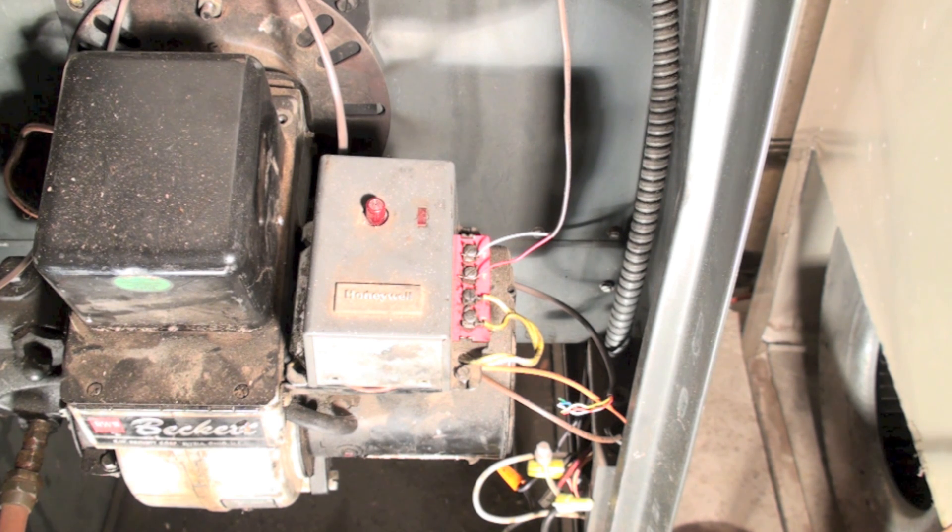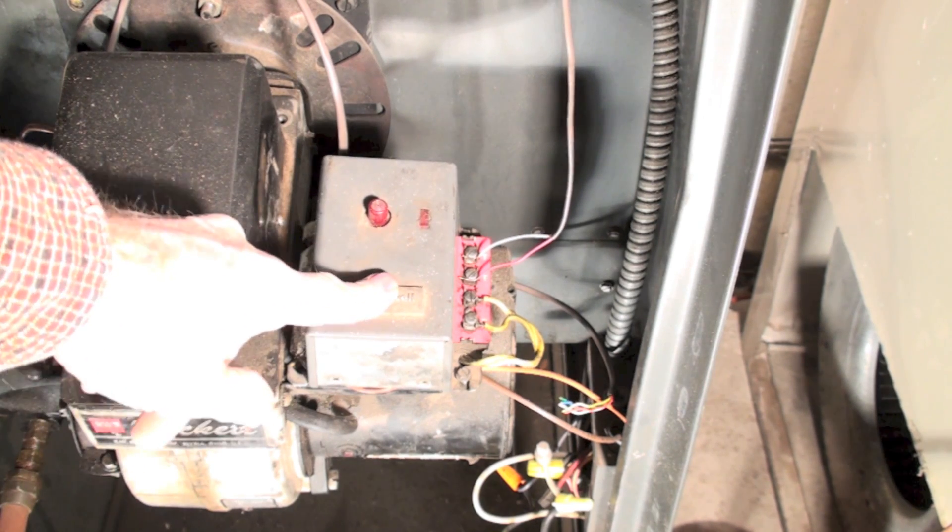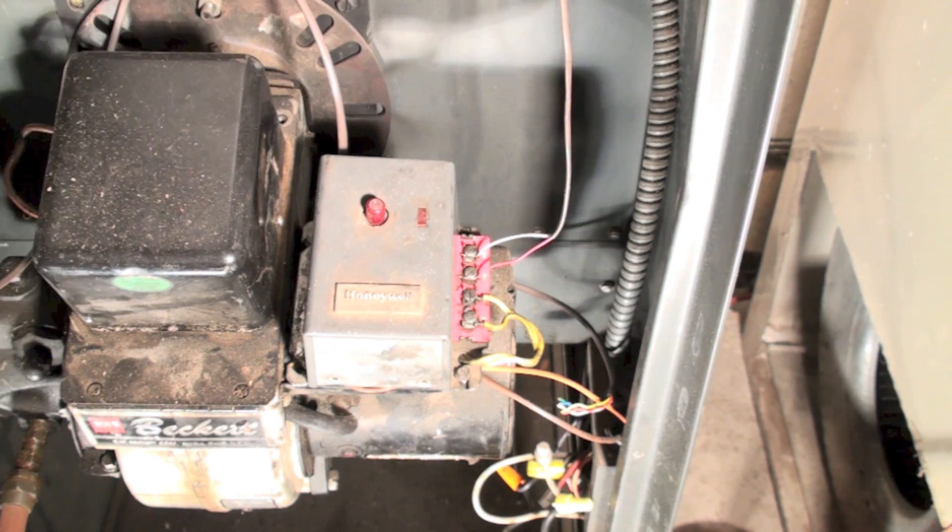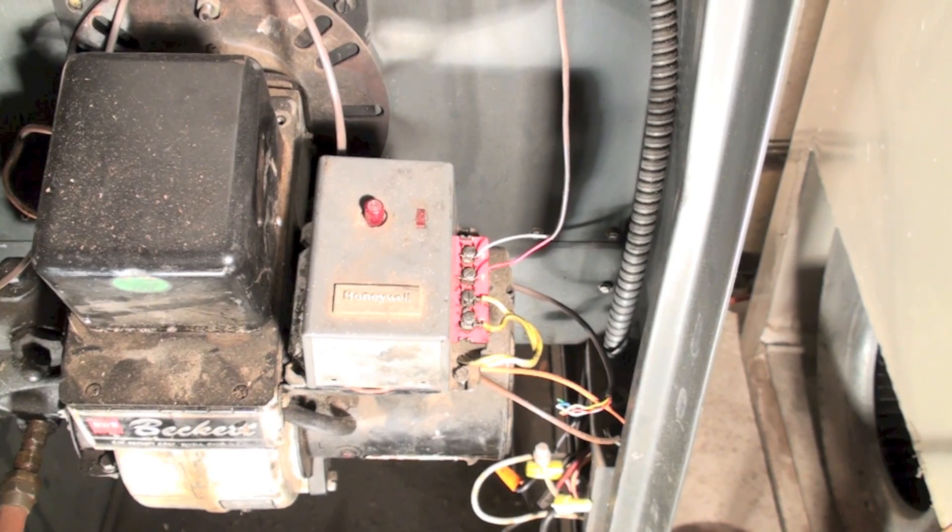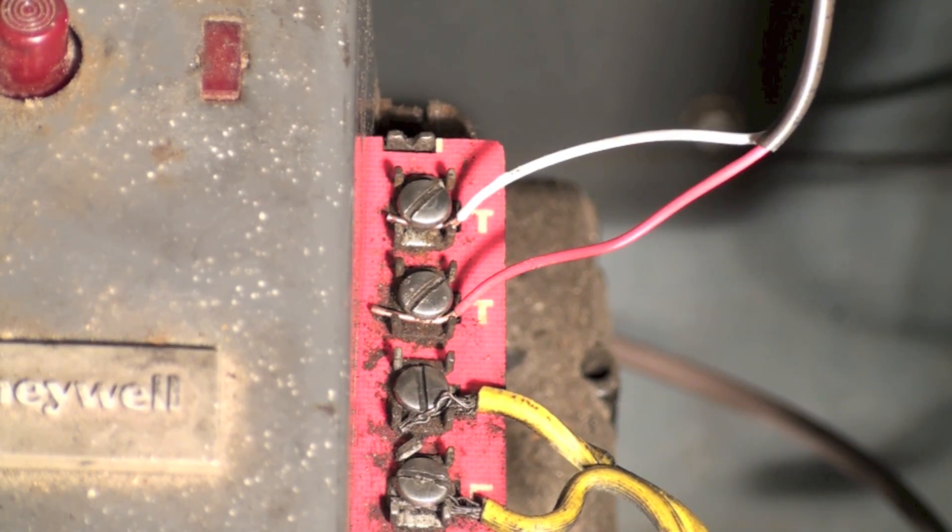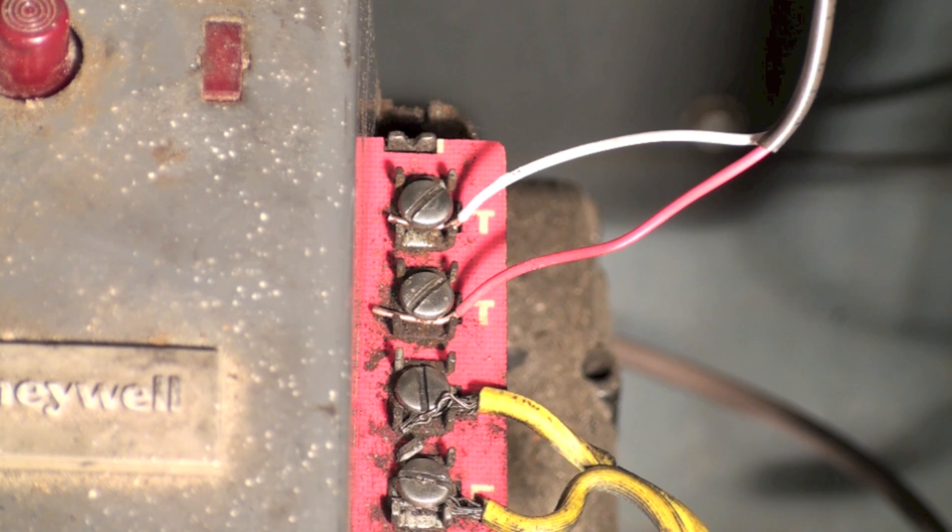You have the two-wire primary control. Now here's your primary control right there. It has its own power source inside, and it's not a big enough power source to power anything except itself. So you just have the two wires right here going up to the thermostat.